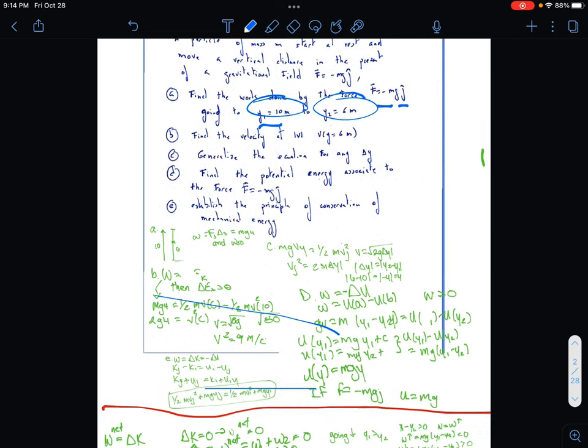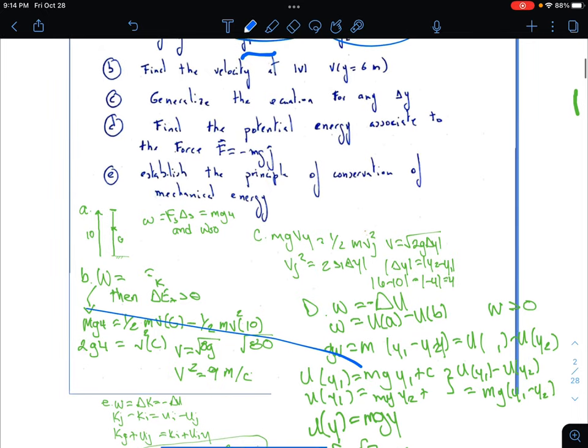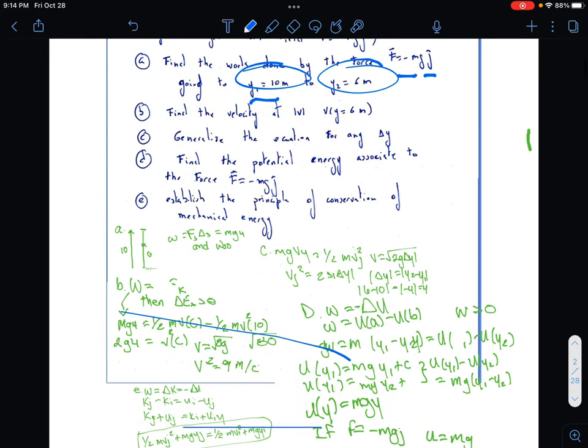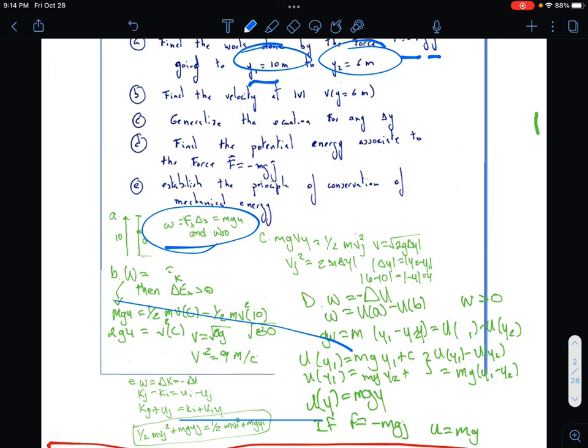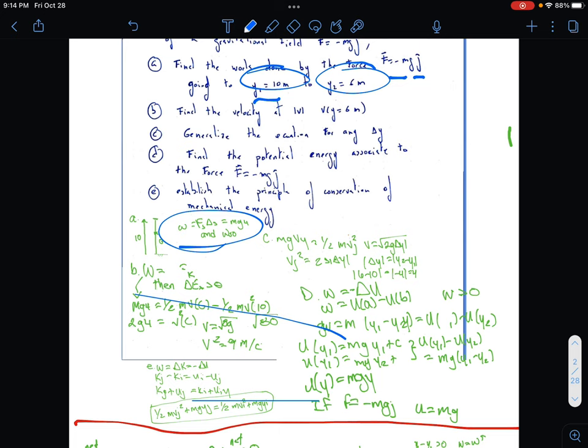So pretty much for that one it's going to be right here. W equals F dot delta s equals mg times 4. We can see how the work is done from the force right there in an upwards direction.